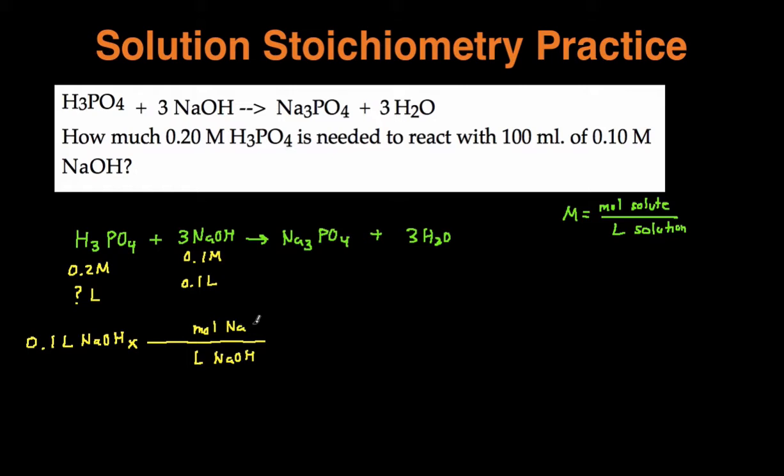And so we're going to have liters of NaOH on the bottom because stoichiometry is all about canceling out units. And then we're going to have moles of NaOH on the top. And moles over liters is the same thing as molarity. So I have 0.1 molar, which means I have 0.1 moles of NaOH per 1 liter of NaOH. And then when you do that, you can see that the liters of NaOH are going to cancel each other out.